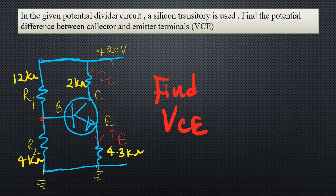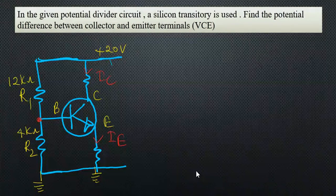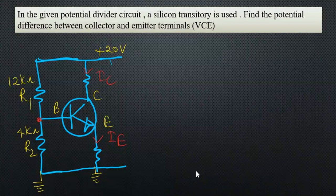In the given potential divider circuit, a silicon transistor is used. Find the potential difference between collector and emitter terminals, VCE. I hope you have tried the question and found the answer, so let's get into the question.